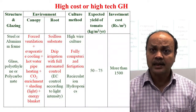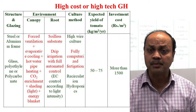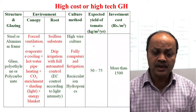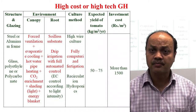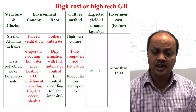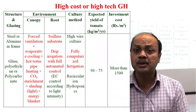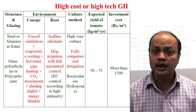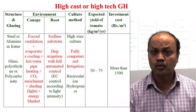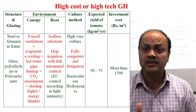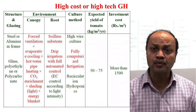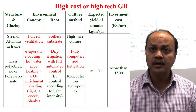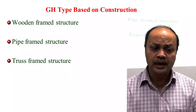In the high-cost greenhouse, artificial growing media is used for better control of root zone properties. A fully computerized fertigation and irrigation system is employed. Due to precise control of both the root zone and the air environment, yield is between 500 to 750 tonnes per hectare. The construction cost is more than 1500 rupees per square meter, depending on the gadgets and control devices used.